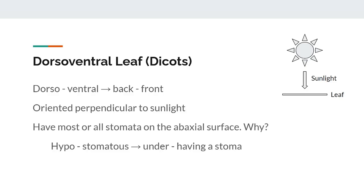Now we're going to talk about how the internal structure of a leaf differs based on the orientation of the leaf. The word 'dorsiventral' can be split into 'dorso' meaning back and 'ventral' meaning front, which emphasizes that there are two different sides to this leaf. The leaf cross-section we just finished making illustrates a dorsiventral leaf, because almost all dicot leaves are dorsiventral. All or almost all of the stomata present on these leaves are on the abaxial surface, because these leaves are oriented perpendicular to the sunlight. Since the abaxial side is not directly exposed to sunlight, it will typically be cooler and therefore less prone to losing too much water through transpiration. The term 'hypostomatous' refers to having stomata only present on the abaxial surface of a leaf.